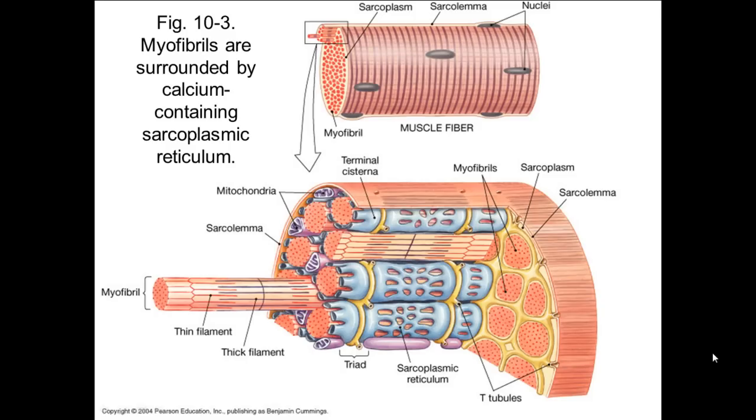From the last video, you can probably remember we finished off by looking at the structure of a single myofiber and we looked at the difference between the actin and the myosin filaments that you can probably see labeled here. The myosin are the ones in purple and the ones in red are the actin filaments.